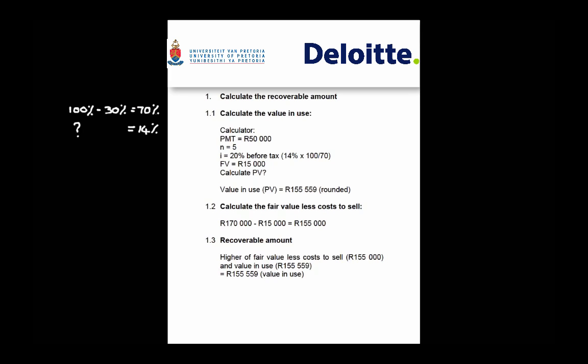Once you have your value in use, the next step is to calculate fair value less cost to sell, which is usually the simpler calculation. Fair value is given at 170,000 Rand with direct disposal costs of 15,000 Rand, giving fair value less cost to sell of 155,000 Rand. Comparing the two amounts, value in use is the higher figure and will represent the recoverable amount going forward.